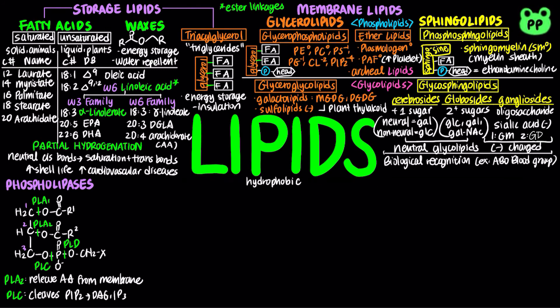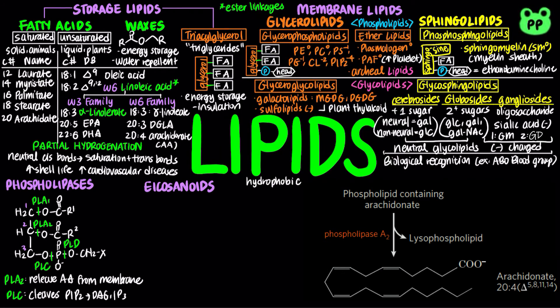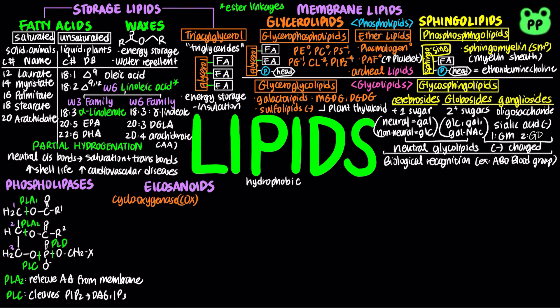Eicosanoids are fatty acid derivatives that function in biosignaling on nearby cells. The majority of eicosanoids are synthesized from arachidonic acid produced from the hydrolysis of membrane phospholipids by Phospholipase A2. There are three main classes of eicosanoids: prostaglandins, thromboxanes, and leukotrienes.